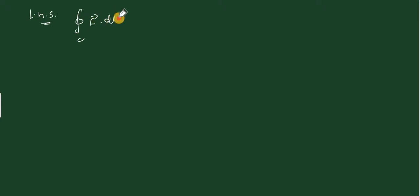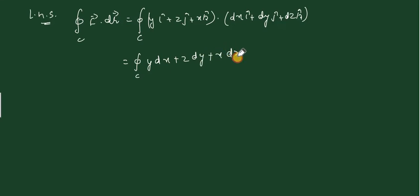Line integral C of f vector dot dr. Now see, f vector we have given here as y i cap plus z j cap plus x k cap dot dx i cap plus dy j cap plus dz k cap. This becomes y dx plus z dy plus x dz.